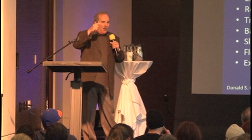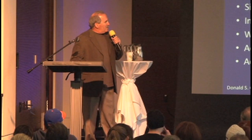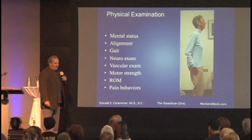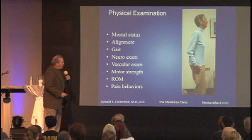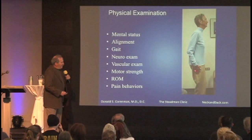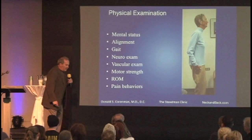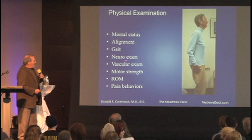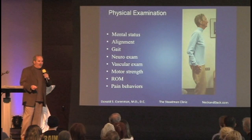Also consider ballistic motions, sneezing and coughing, sleeping positions, flexion and extension sports, time of day, weakness, impact activities, and activity relationships. A picture is worth a thousand words — looking at a patient, note posture, head position, plumb line of the head over the pelvis. If her head is in front of the pelvis and she's bending her knees to compensate, she's showing you the biomechanical fault. You have to go through mental status, alignment, gait, neuro exam, vascular exam, motor strength, range of motion, and pain behaviors.